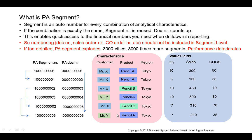If the same customer purchased the same product, then you have an existing PA segment — you don't need to create a new PA segment. The same customer purchasing the same product means the same PA segment will be reused. So, if the combination is exactly the same, the PA segment is reused.